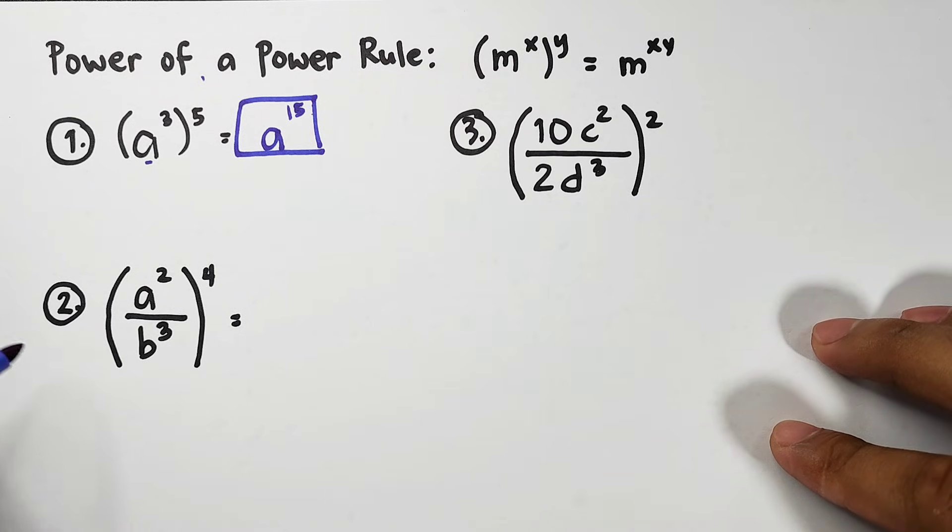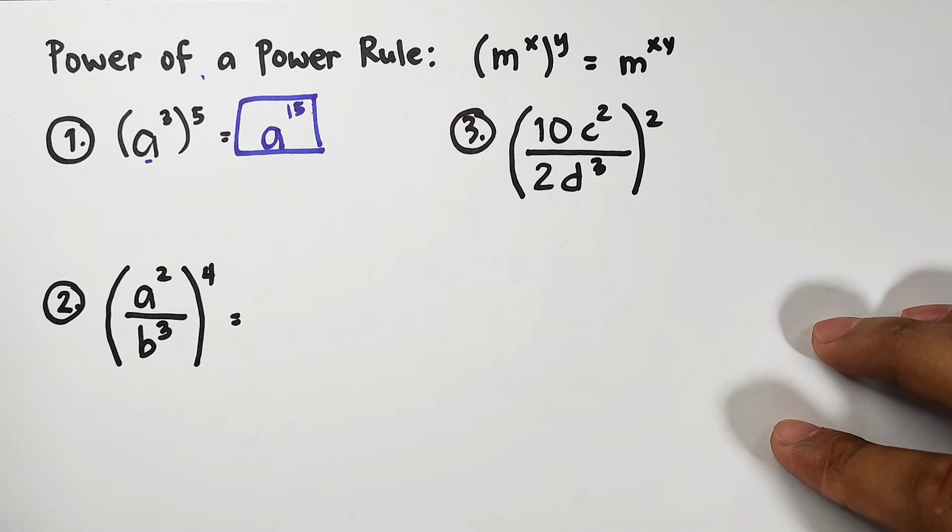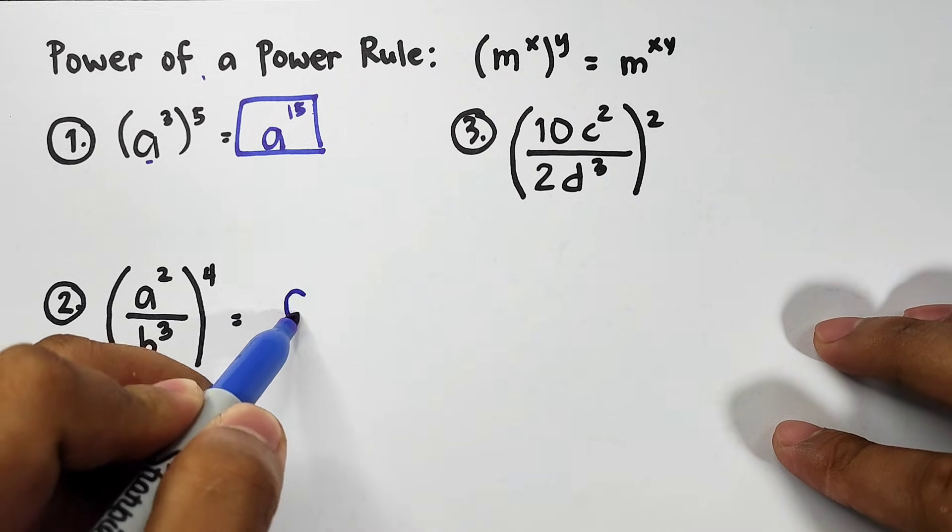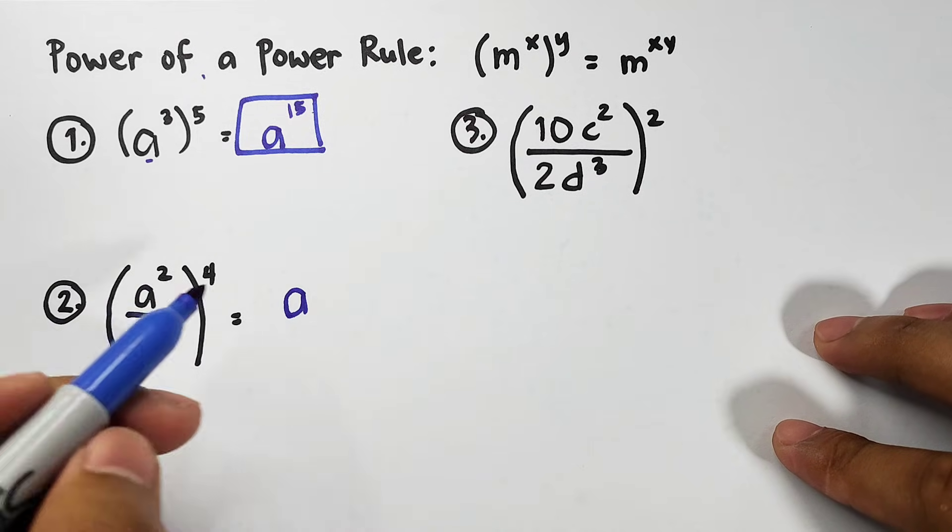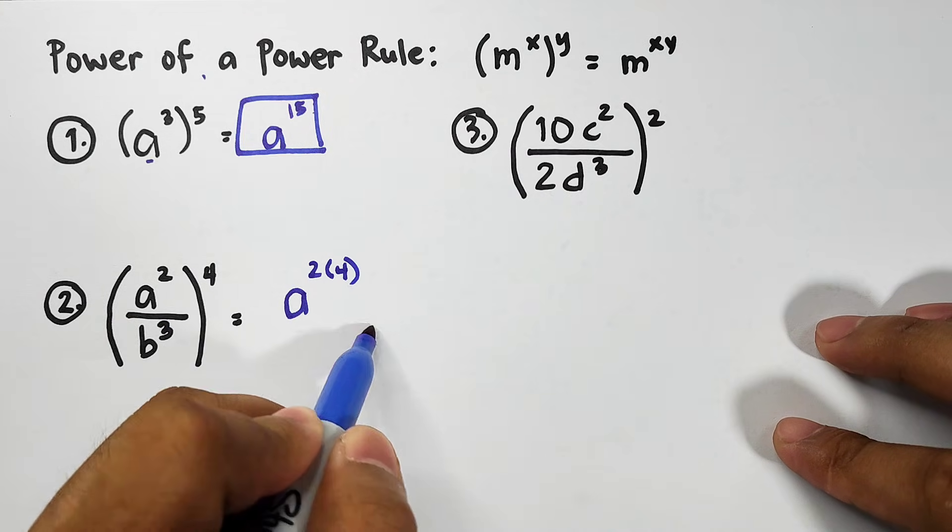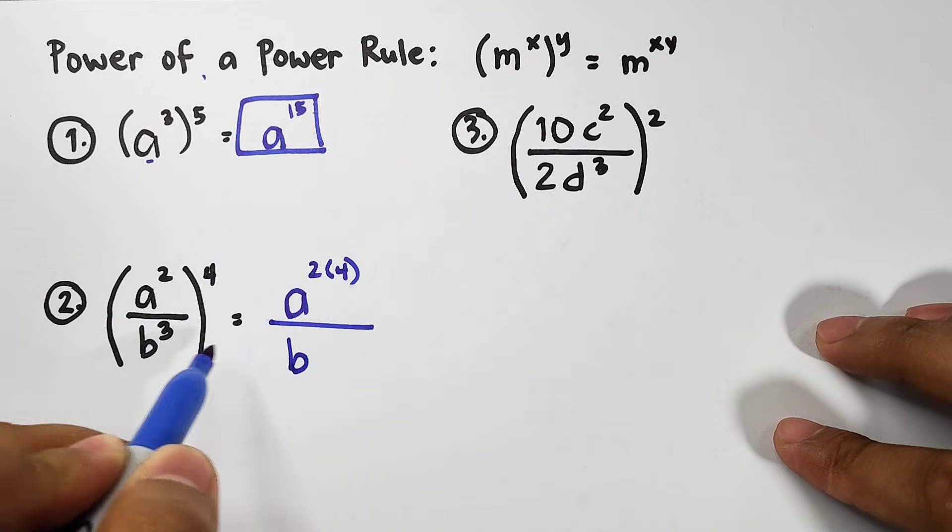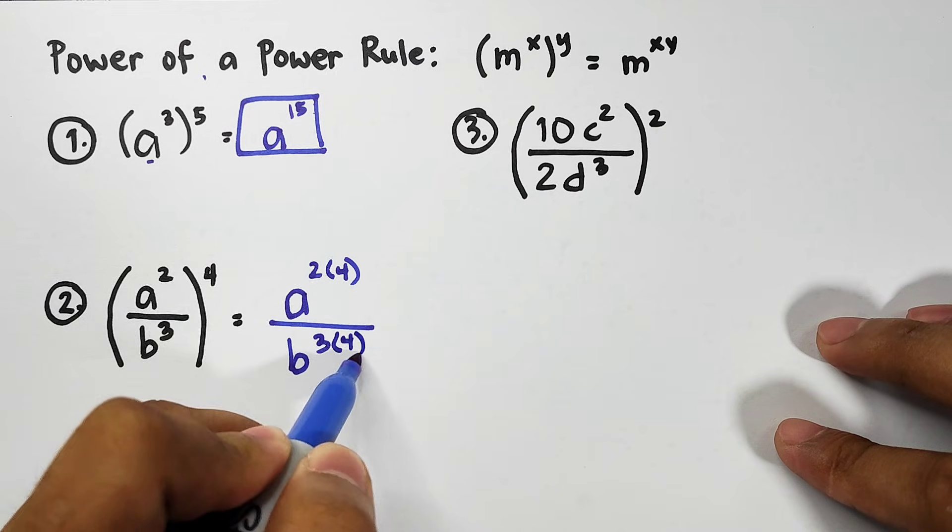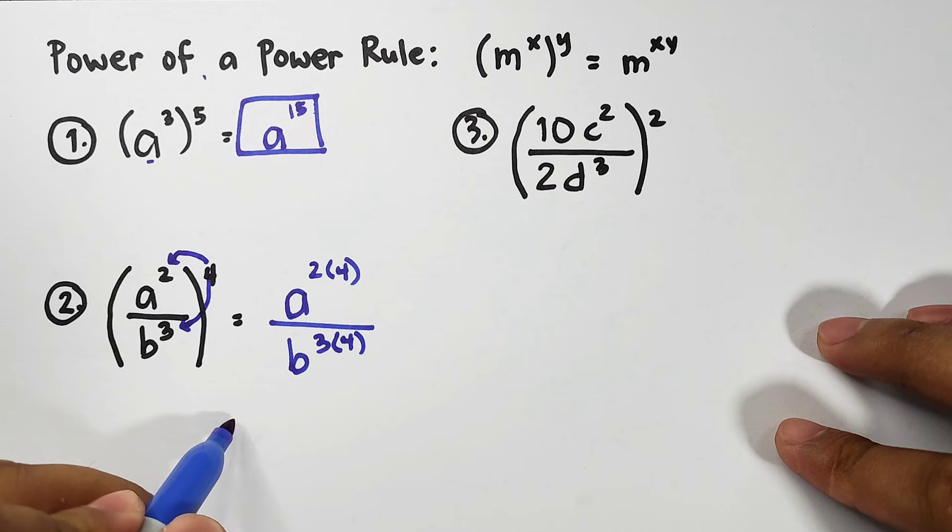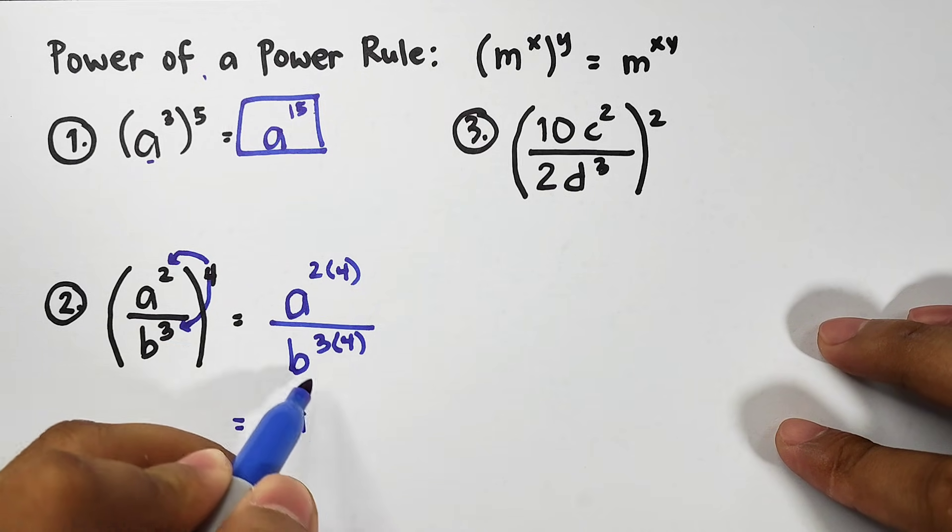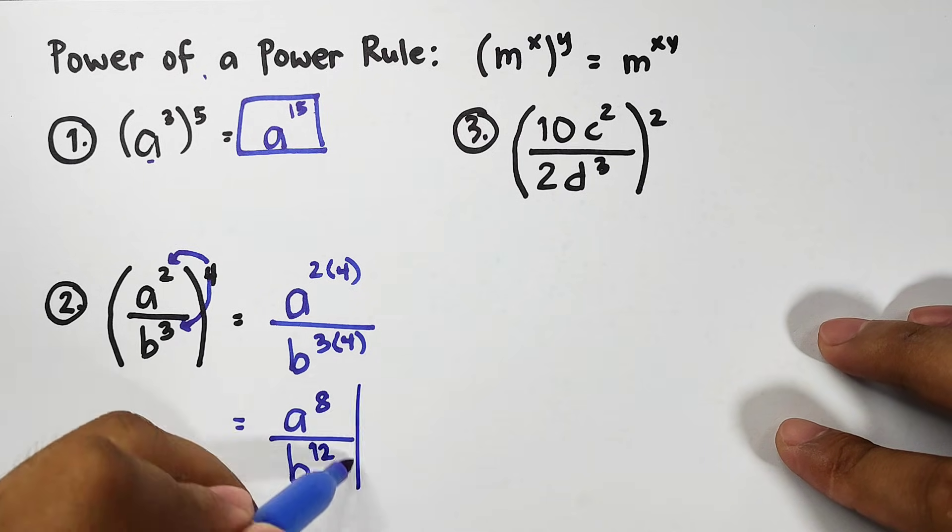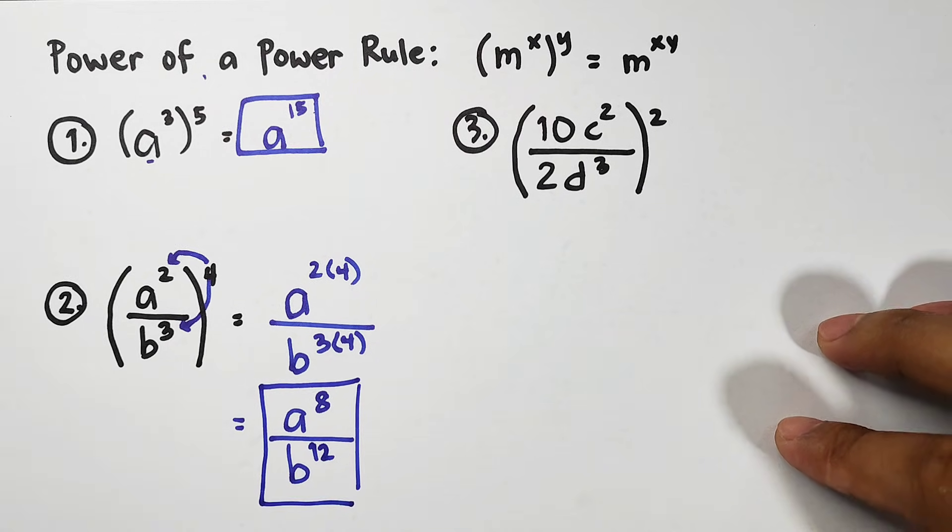Next, what about this? What you need to do here is this. Let's distribute. For the numerator, copy the variable a. The original exponent of a is 2. Okay. That is 2 times 4. Over denominator b, 3 times 4. Distribute the exponent here and here. Simplifying this, this will give us a raised to 8 over b raised to 12. This is the simplified form. Okay, guys?